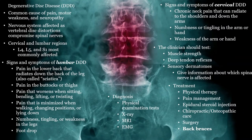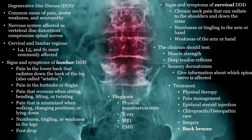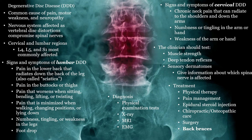Degenerative disc disease or DDD is a common injury of the back and neck — it is basically osteoarthritis of the vertebrae. This can lead to back pain and muscle spasm, but is not serious unless there is evidence of nerve impingements. In the lower back, look for foot drop or signs of sciatic nerve irritation. In the neck, look for arm weakness and pain that radiates down the arms. Back pain that improves with changes in position is due to musculoskeletal problems, while back pain that does not improve with position changes is worrisome for cancer metastasis or infection of the spine.